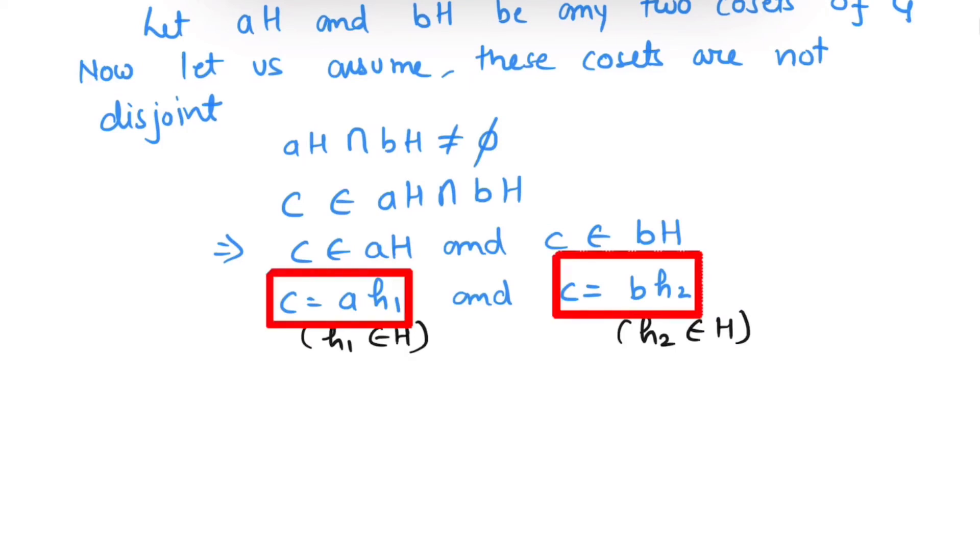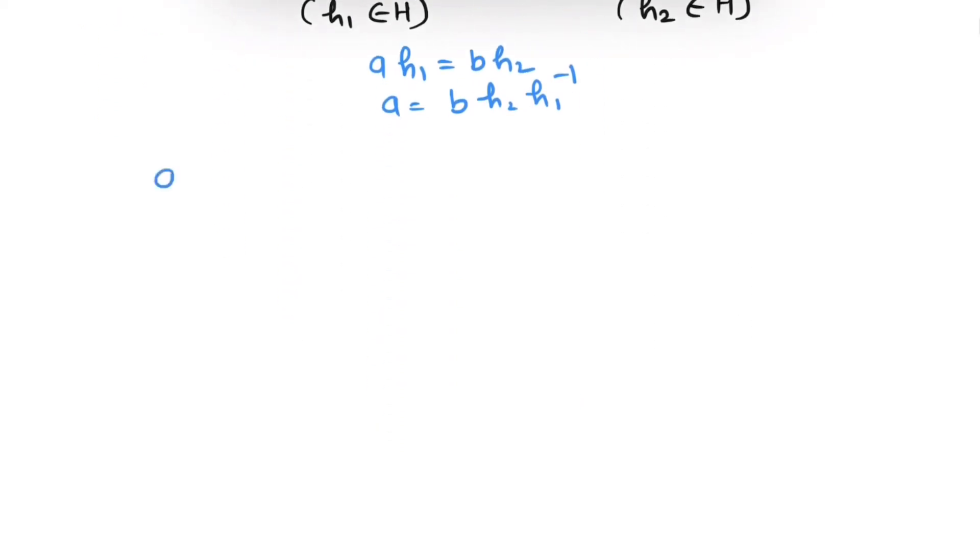Now, from these two equations, we can conclude that AH₁ equals to BH₂. Now, multiplying H₁ inverse both sides, we have A equals to BH₂H₁ inverse. Now, let us write coset AH. So we have AH equals to, and A is what? BH₂H₁ inverse into subgroup H.